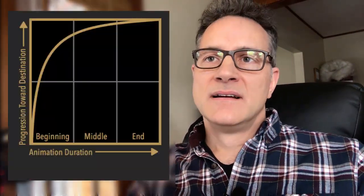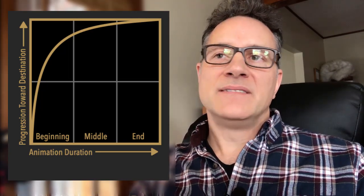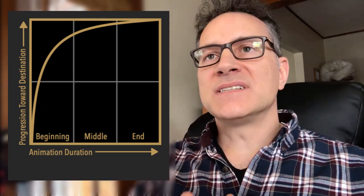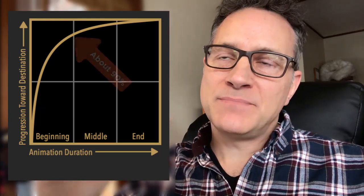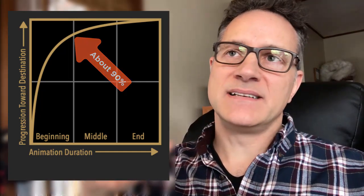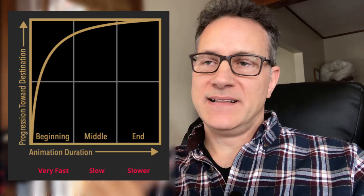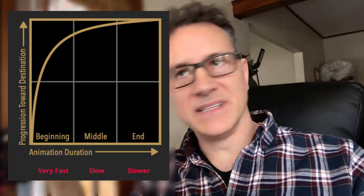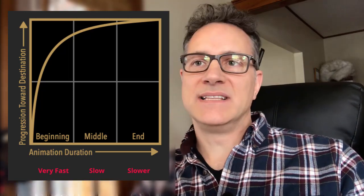Let's look at one more example. By looking at this curve, can you predict what's going to happen? Say this is another three-second animation. In the first second, the animation moves very fast — it reaches about 90% toward its destination. In the middle second, it slows down a little, maybe 5% to 7% progress. And then the last part is probably less than 3%. So it's going to move very fast, then slow, and then even slower toward the end.